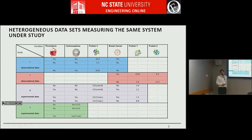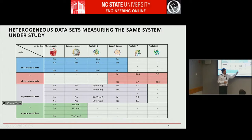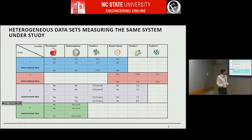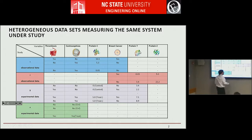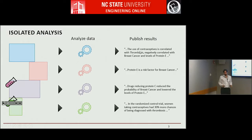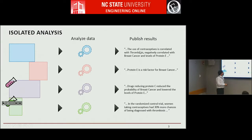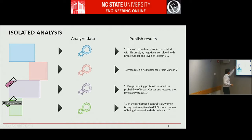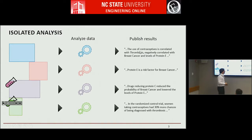Maybe some other medical expert performs an experiment, an intervention — they intervene and set the values of one of these variables. This is a common situation where lots of studies are being performed for a disease. If you put all the data together, you see these big groups of missing variables. All these data sets come from different distributions.